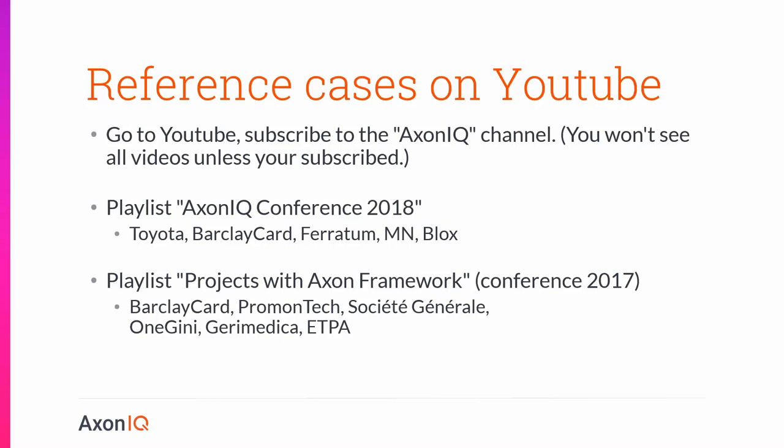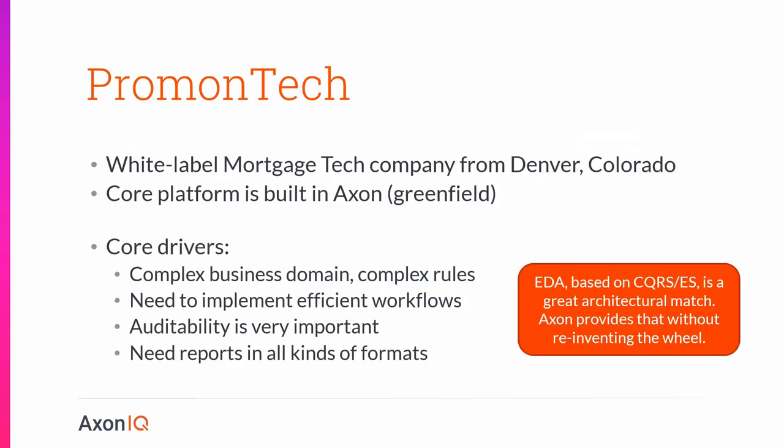I want to briefly touch upon three of those cases. The first is Promontech — a white label mortgage tech company from Denver whose customers are major banks that issue loans. They had the luxury of a greenfield and built a core platform using Axon. Mortgages are a very complex business domain with complex rules; they wanted efficient workflows, prevention of double data entry, auditability, and reporting in all formats. It made a lot of sense to choose event-driven architecture — specifically CQRS and event sourcing — and they found Axon provides an implementation in Java that prevents reinventing the wheel.